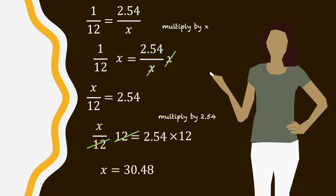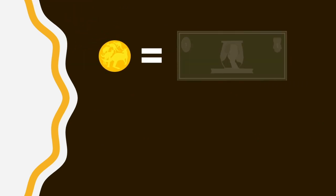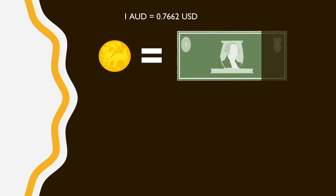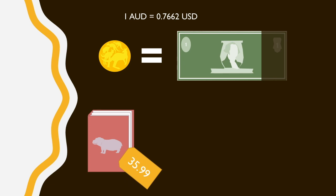How about some other conversions that preserve ratio? 1 Australian dollar is equal to 0.7662 US dollars. How much in AUD is a book from the US that costs $35.99? Well, we have 1 over 0.7662, this is the ratio of Australian to American dollars, is equal to the unknown value of Australian dollars to the 35.99 price tag.